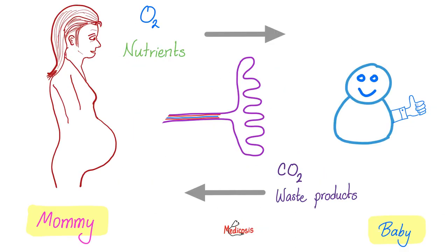What is the function of the placenta? It's like a two-way highway. It will help nutrients and oxygen pass from mommy to the baby, because the baby cannot eat and the baby cannot breathe — the baby's lungs are not working until the baby is born. When the baby is born, the baby can breathe on its own. Moreover, the placenta is going to help the baby get rid of carbon dioxide and waste products.